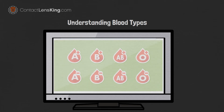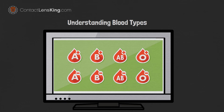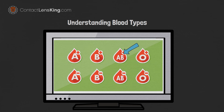This creates the eight most common blood types: A positive, A negative, B positive, B negative, O positive, O negative, AB positive, and AB negative.